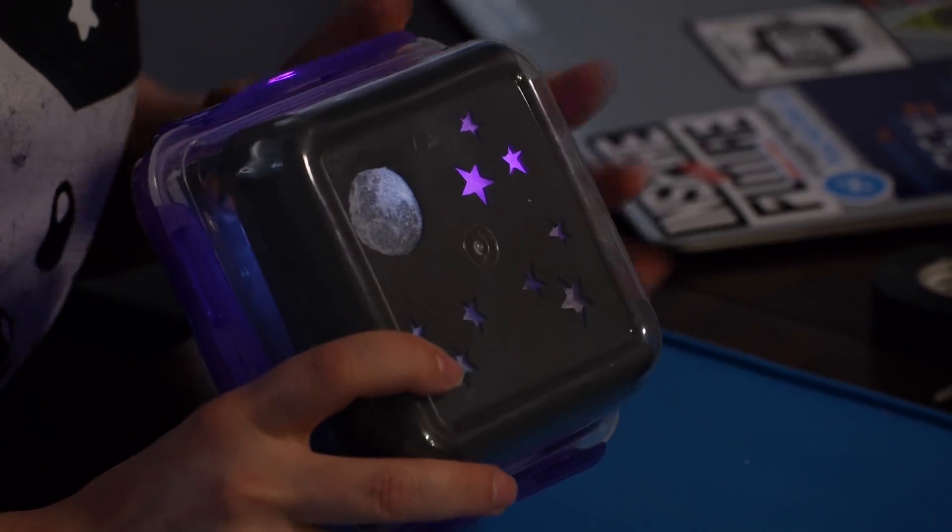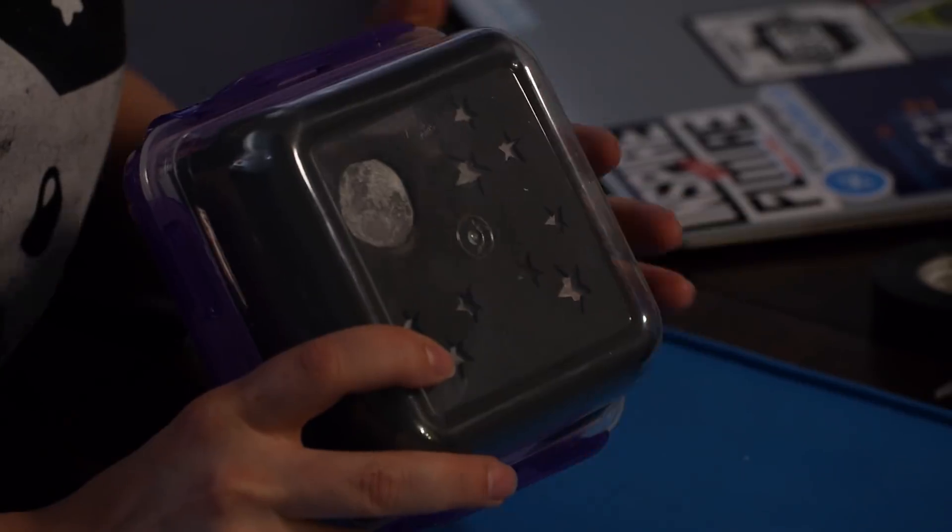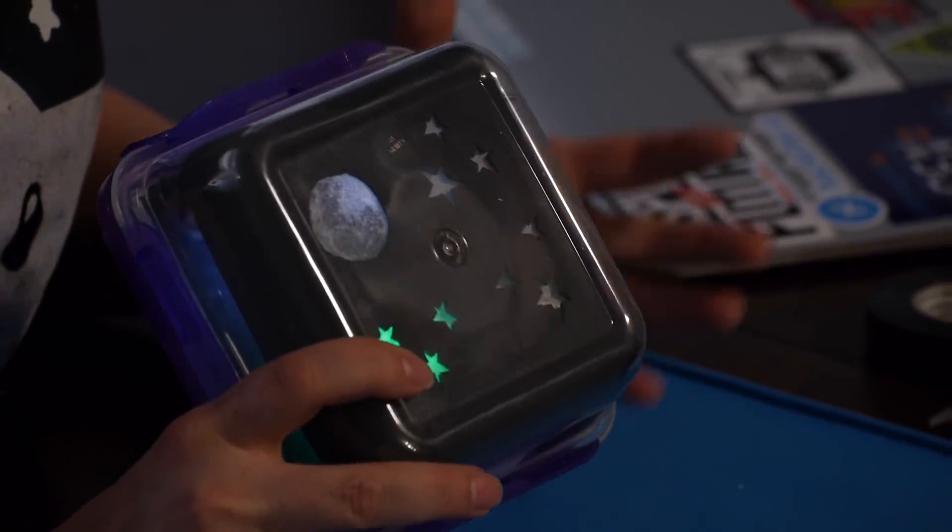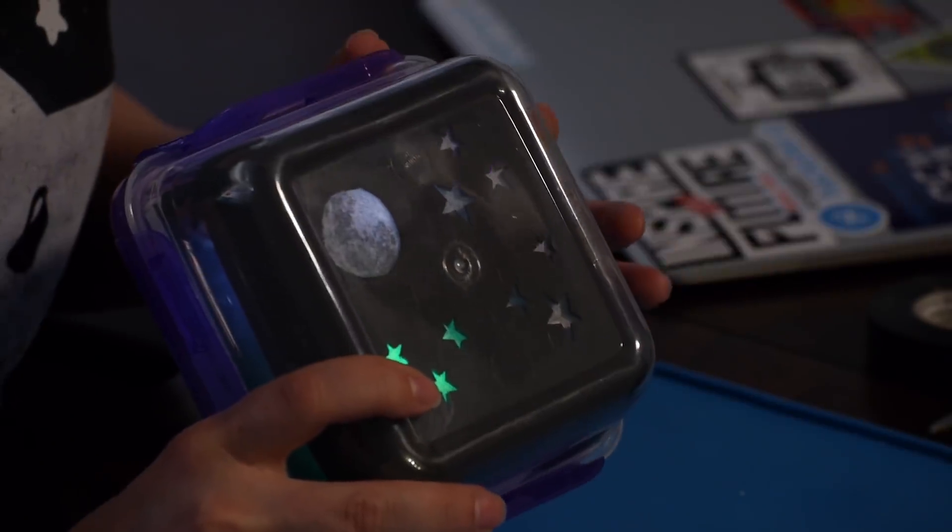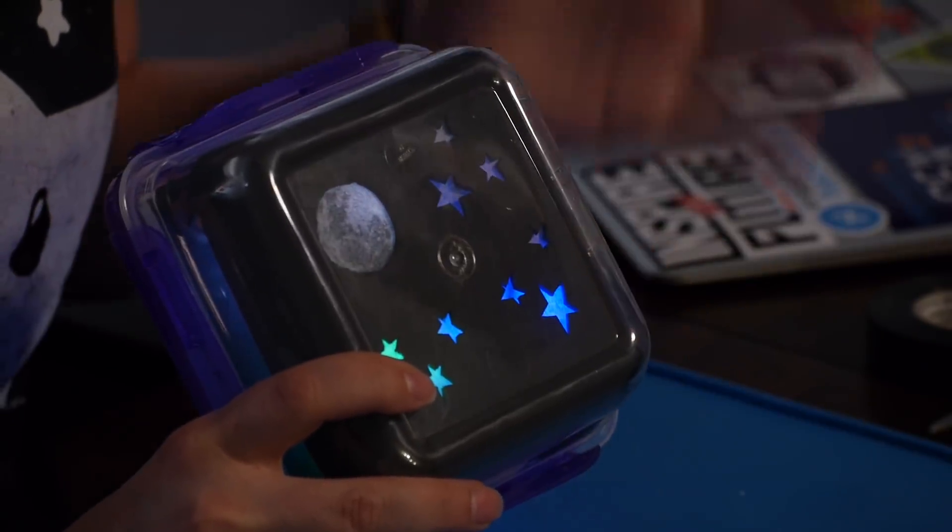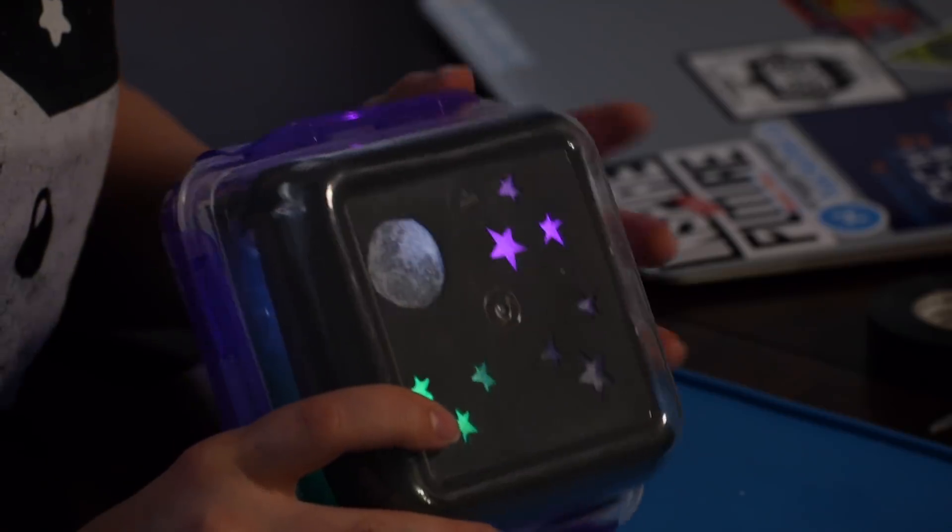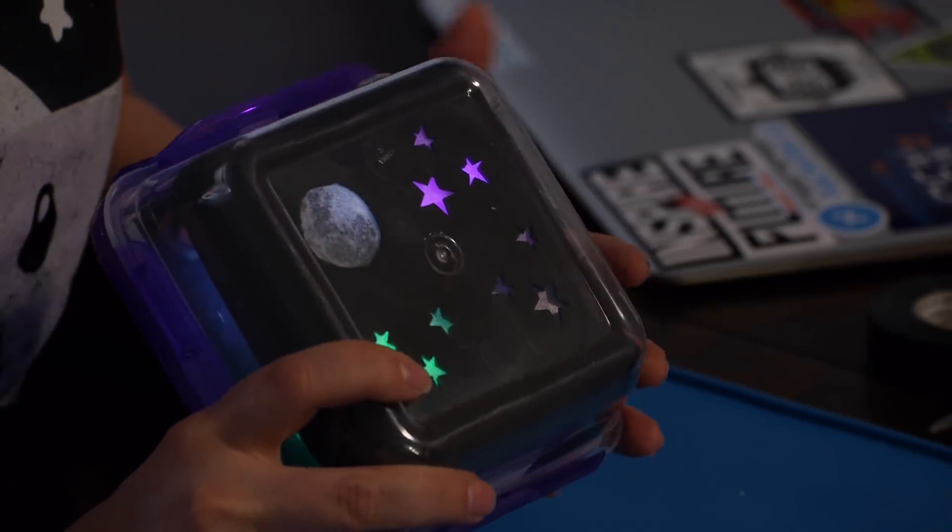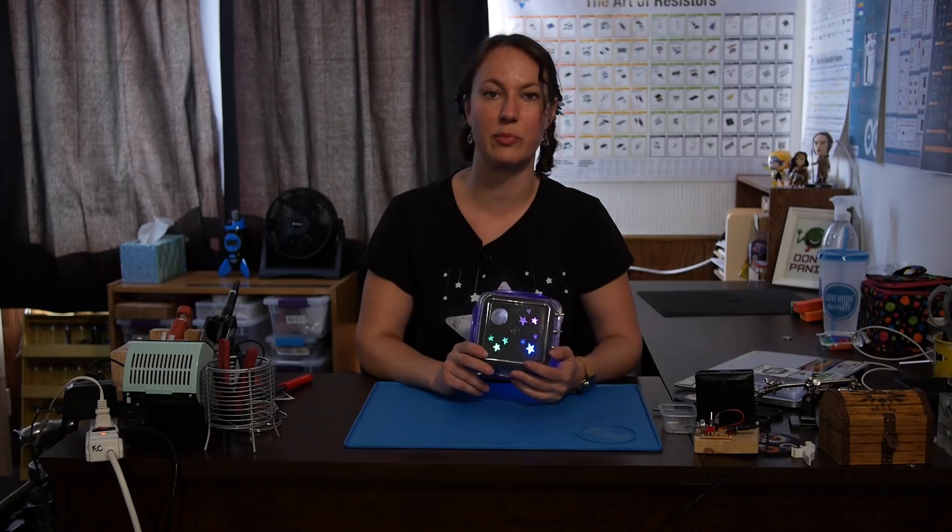Switch one, purple and white are on, off. Switch two, only blue and white are on, awesome. Switch three, green and white are on. And if I switch on any of my other switches, it just turns on the color and white stays on because I want it on the whole time, as long as one of the other colors is on. Pretty cool. Look at all those pretty stars.